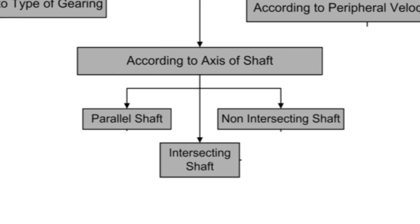According to the axis of shaft, gears are classified into three groups: parallel shaft gears, intersecting shaft gears, and non-intersecting or non-parallel shaft gears.